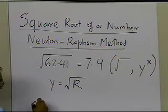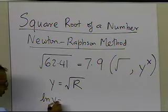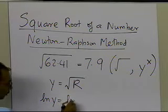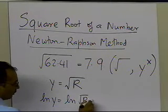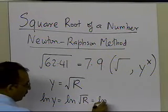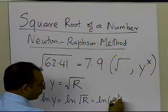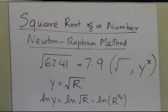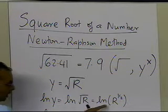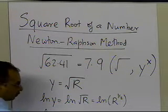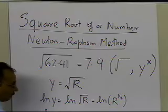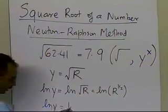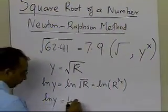What you can do is take the log of both sides, so log of y is equal to log of the square root of r, which is the same as log of r raised to power half. Using the log formula — log of a raised to power b equals b log a — you get log y equals one-half log of r.